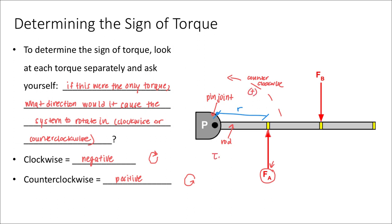So the torque produced by force A is going to be positive, because if that were the only force, it would cause the door to rotate in the counterclockwise direction.